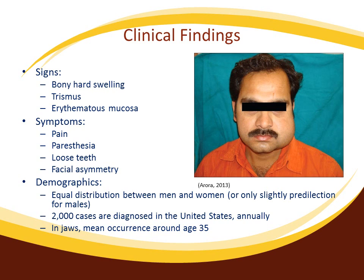Some studies suggest it is more common in men than women. 2,000 cases are reported annually in the United States, with an average age of occurrence around 35. In contrast to incidence within the long bones, osteosarcoma of the jaws occurs at an older age in skeletally mature patients, typically peaking 10 to 20 years following adolescence, at a mean age of 34 to 36 years. It also presents differently clinically than osteosarcoma found in long bones.